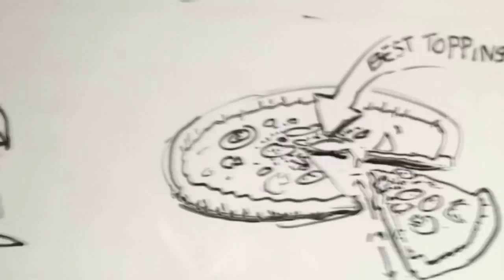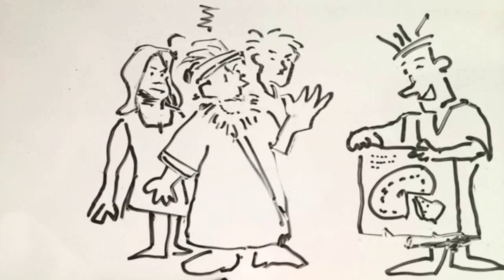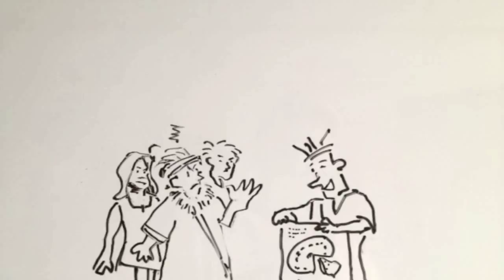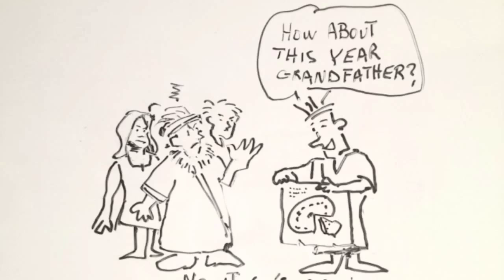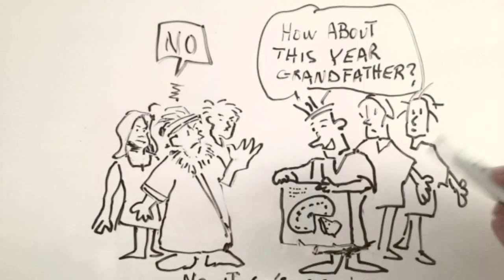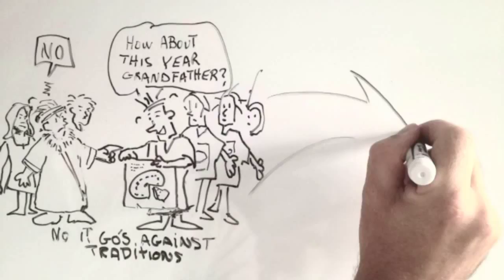the chief doesn't like this round pizza idea at all. He considers it going against tradition. But our young entrepreneur grandson sticks by his convictions, and every year brings up the round pizza idea. This causes conflict, and eventually the chief asks him and a small group of supporters to leave the tribe.